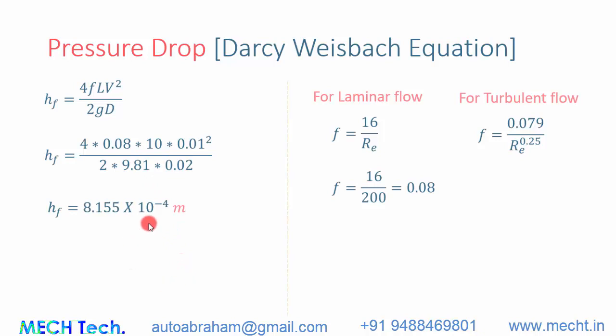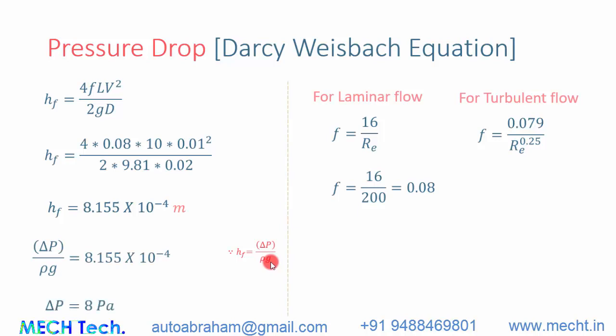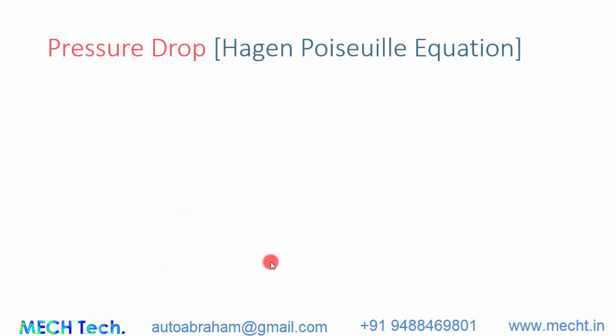Substituting the values into the head loss equation gives 8.155 × 10⁻⁴ meters. Since head loss equals pressure drop divided by ρg, we multiply by ρg to get a pressure drop of 8 Pascals. Since the flow is laminar, the pressure drop is very small.